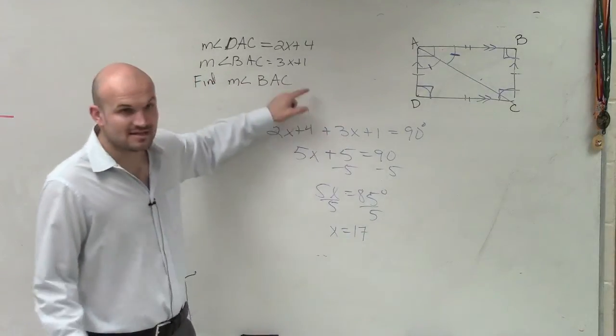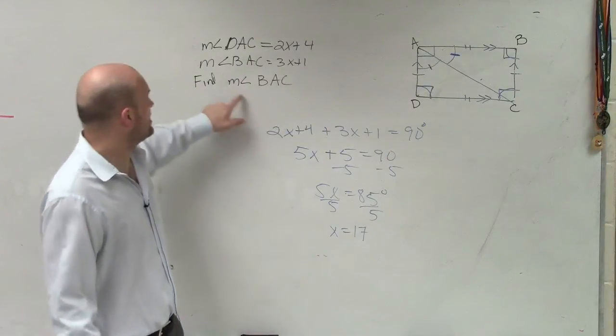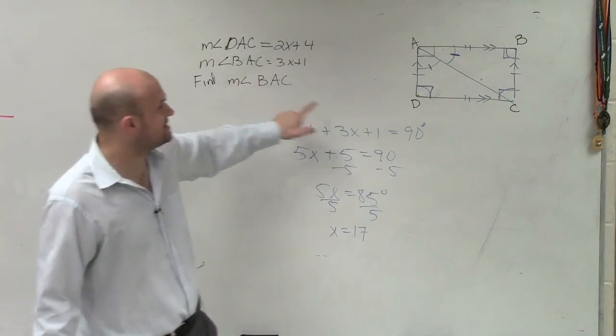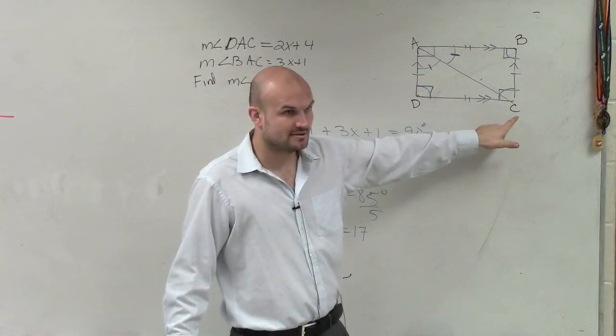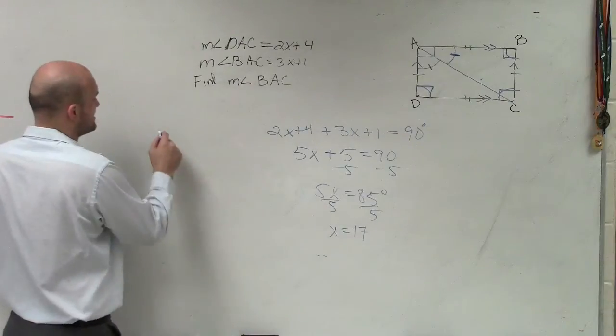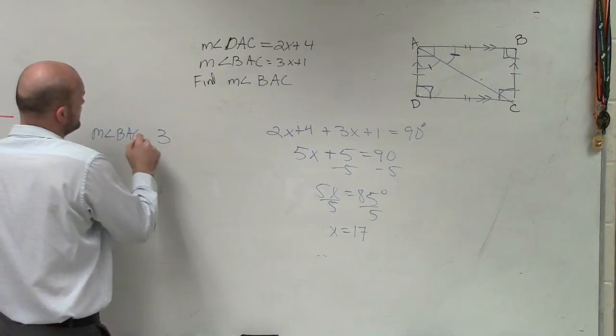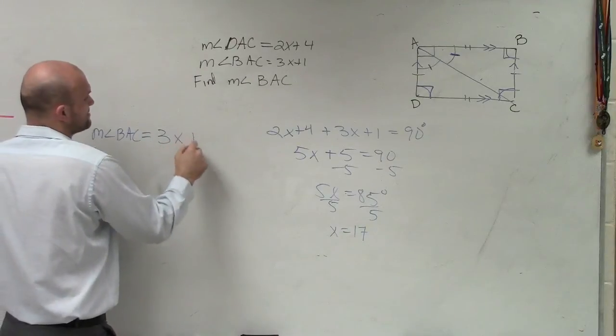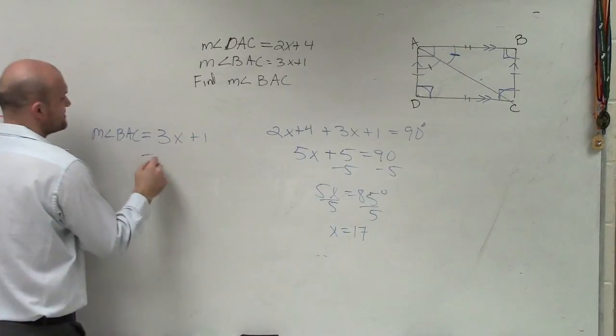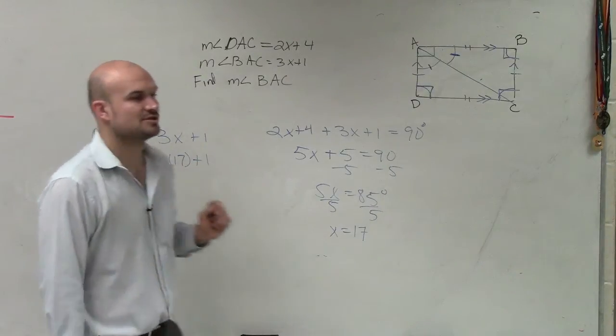But now that doesn't tell us the answer though. That's the value of x. Right? What they're trying to find is find the measure of BAC. B to A to C. So it's not 90 degrees, but it's part of 90 degrees. So BAC is 3x or measure of angle BAC is equal to 3x plus 1. We now know x is 17.